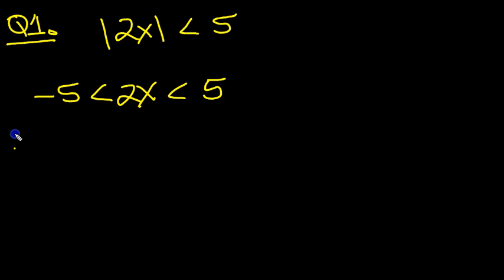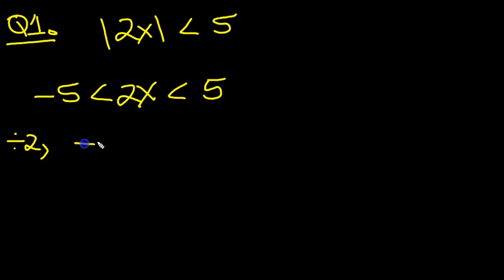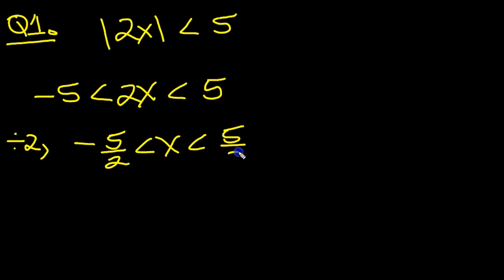Divide by 2 all the way through and we get minus 5 over 2, then it's less than x, which is less than 5 over 2.